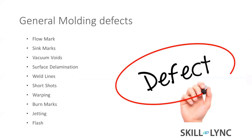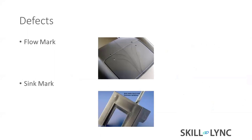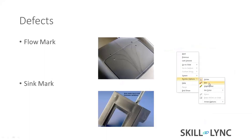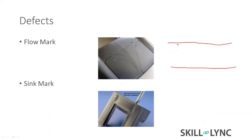Now, the general molding defects: flow marks, sink marks, voids, surface delamination, weld lines, short shots, warping, burn marks, jetting, and flashes. Let's see them one by one. Flow marks are very common - if you are not keeping your mold temperature in a proper way, it will create flow marks. The plastic material flows in a fountain flow pattern. If your surface is very cold or not optimized, you can see flow marks easily and won't get a proper finish.